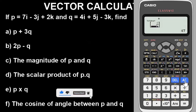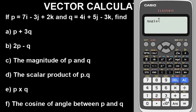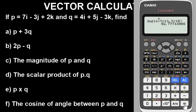Now lastly, part F — the cosine of the angle between vector P and Q. Go back to option and move downward with the down key. You will see 'angle' — press 3. To find the angle between vector P and Q: go to option, vector A is option 1 here, then press option 3. Separate vector P and Q with a comma — press shift then this button for the comma. Then vector B, press 4, close the bracket. Press equal to get the angle — the result is 82.77 degrees, leaving it in two decimal places.